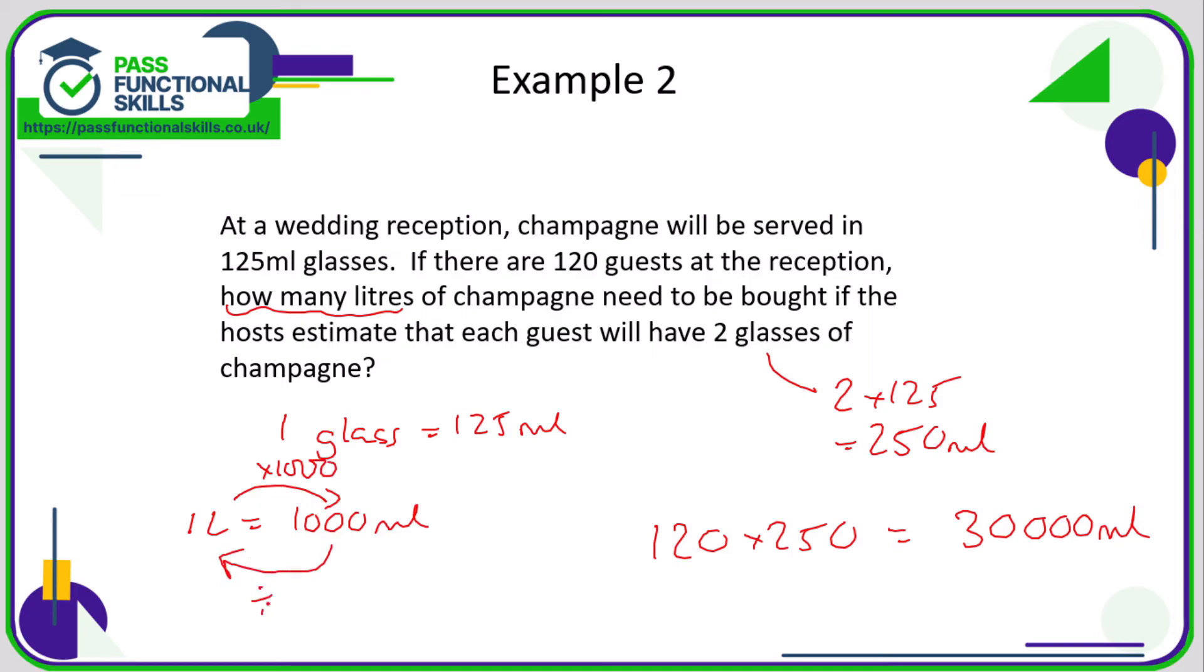Now this number is easy to divide by one thousand because it's got so many zeros on the end. When you're dividing by a thousand, you can just chop off three zeros—so one, two, three—so the answer is 30 litres.